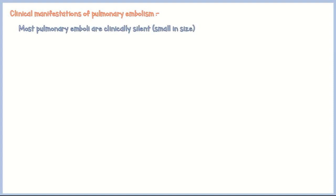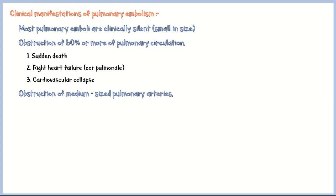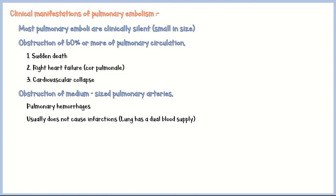Most pulmonary emboli are clinically silent because they are small in size. Obstruction of 60% or more of pulmonary circulation may result in sudden death, right heart failure (also known as cor pulmonale), and cardiovascular collapse. Obstruction of medium-sized pulmonary arteries may result in pulmonary hemorrhages, but usually does not cause infarctions because the lung has a dual blood supply. However, obstruction of small end arteries may result in hemorrhage or infarction.